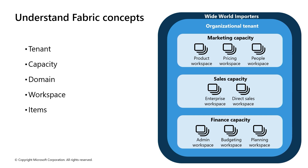Capacities define the ability of a resource to perform an activity or produce output. Different items consume different capacity at different times. Fabric offers capacity through Fabric SKUs and trials. A domain is a logical grouping of workspaces, used to organize items in a way that makes sense for your organization. You might have a domain for sales, another for marketing, another for finance.